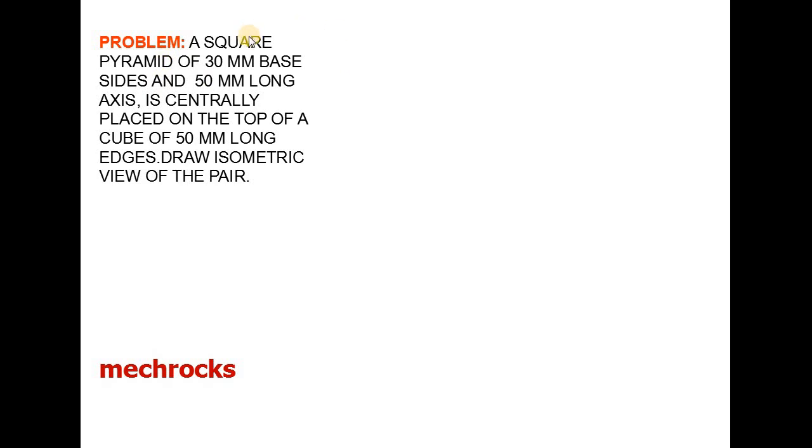The given square pyramid is placed on the cube. For this combination we have to draw the isometric view. First you draw a horizontal line like this of any length. Next you draw a 30 degrees line like this. An angle of 30 degrees of any length. Similarly this side also, 30 degrees of any length.